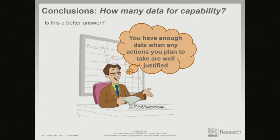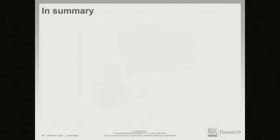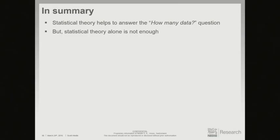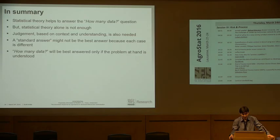Key message: when you have data, you learn nothing if you don't look at it — even with three or four data values. Back to the cartoon character for conclusions. With 30 data and approximately 18 degrees of freedom, it's not a bad answer. A better answer: you have enough data when any actions you plan to take are well justified. That kind of response may be confusing, but the answer only makes sense if the rationale behind it is understood. The rationale is that action is important, but also that timely action is important, and that capability is simply about action. Too many people think capability is about the computation of the statistic — and unfortunately that is not the case.